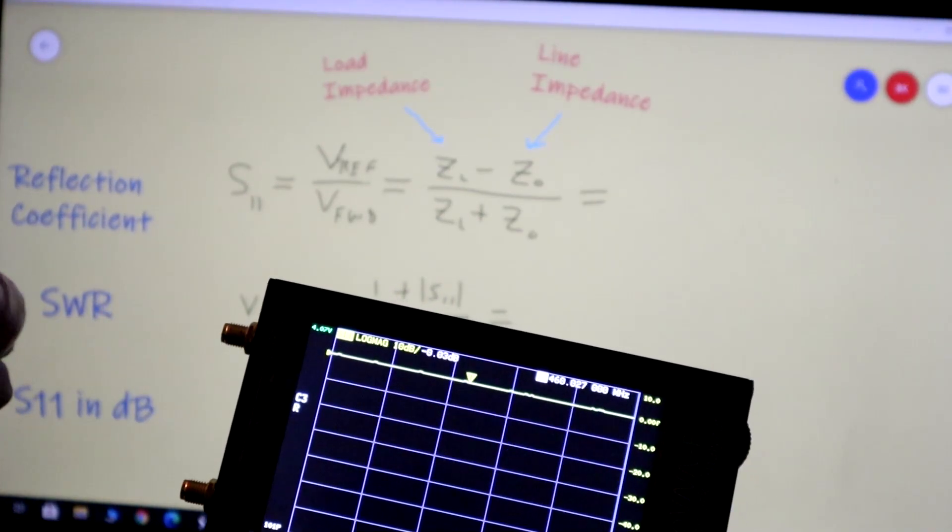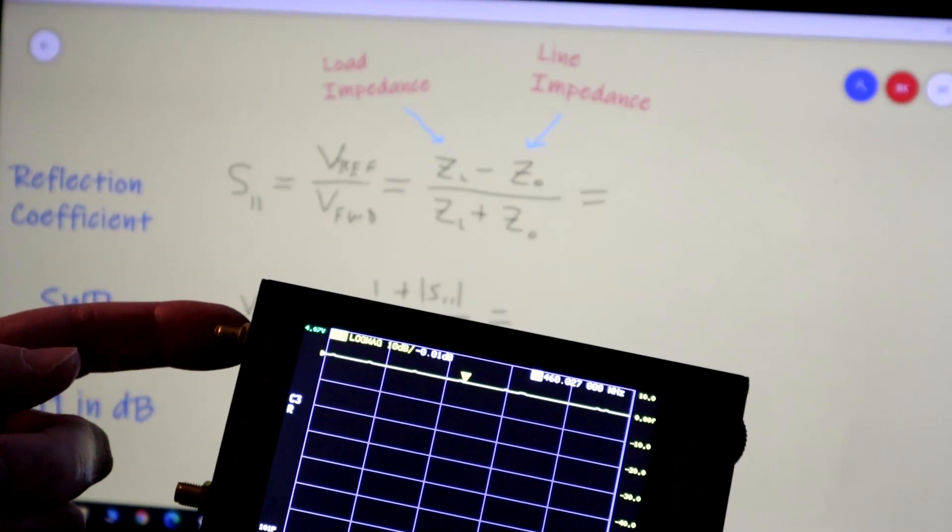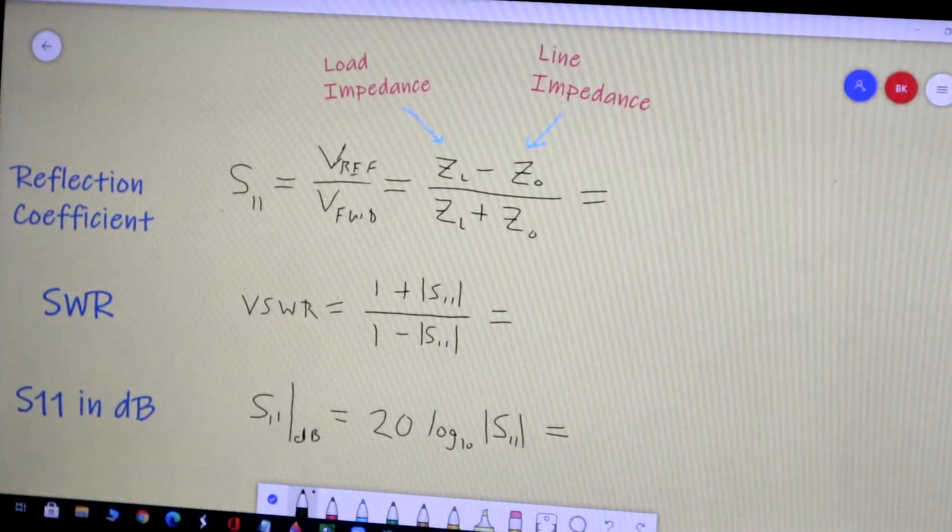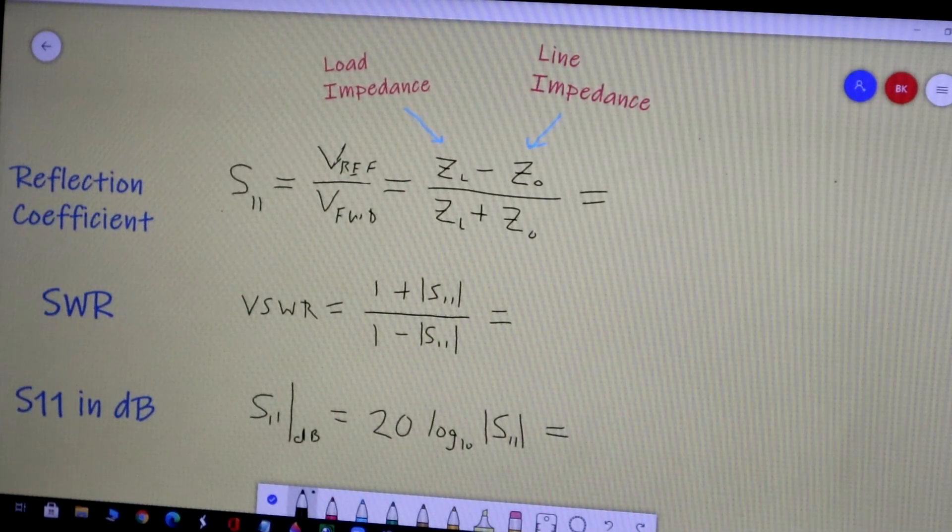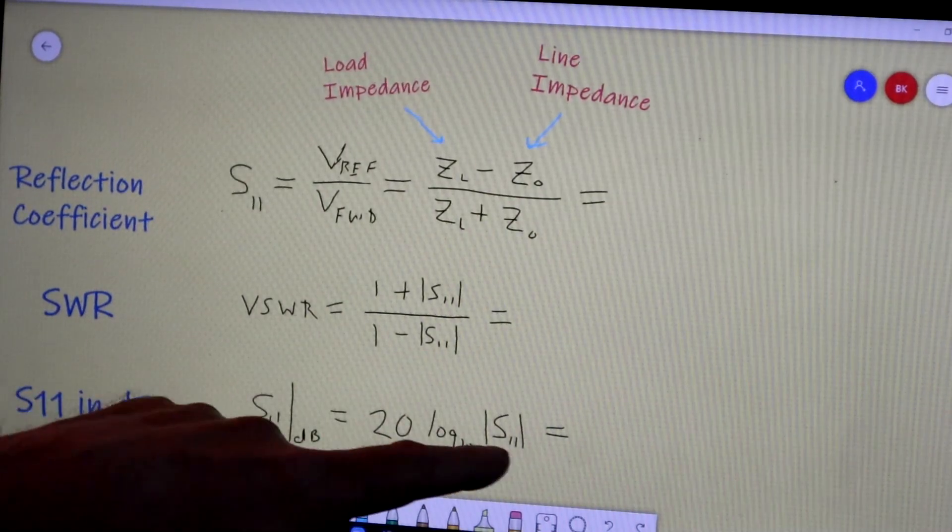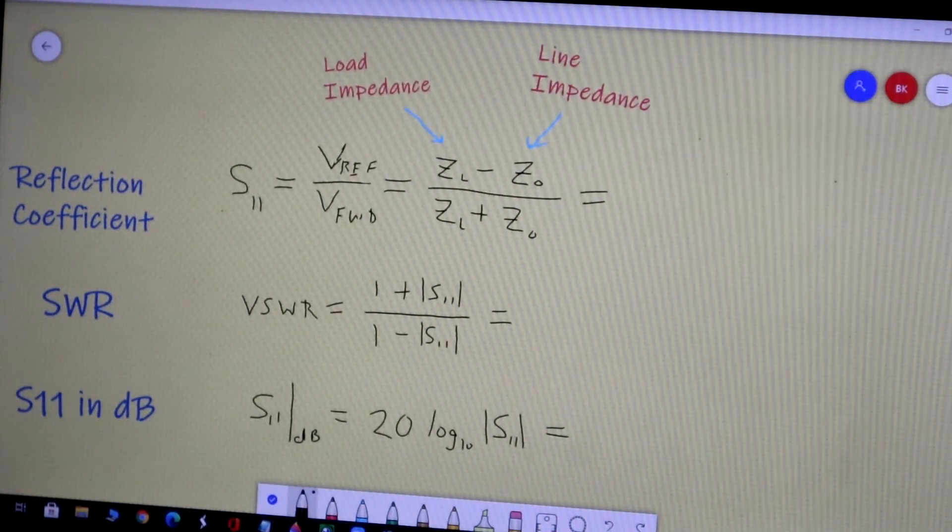The forward voltage that goes out of it and the reflected voltage that comes back into it. And it takes the ratio of those two and presents that as S11. Now it presents it in dB and we'll come back to this formula in a few minutes.